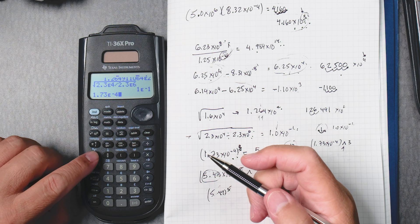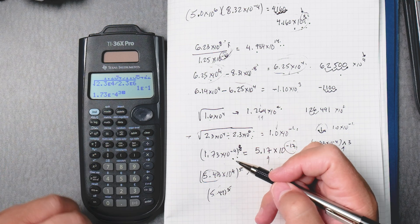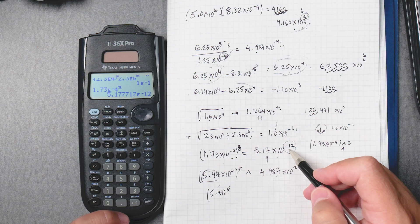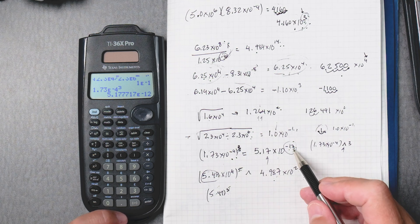So, we press this button, and then we put it to the third. Enter. 5.17 times 10 to the minus 12. Negative 4 times negative 3 gives you negative 12.